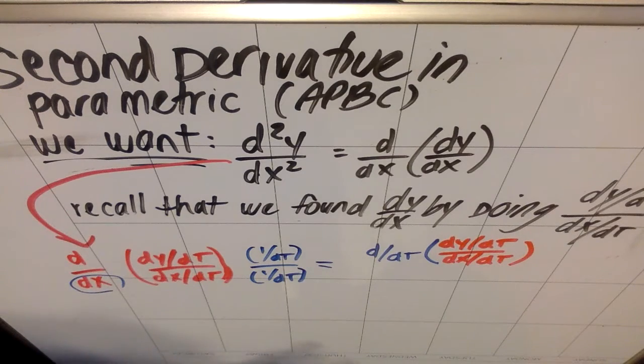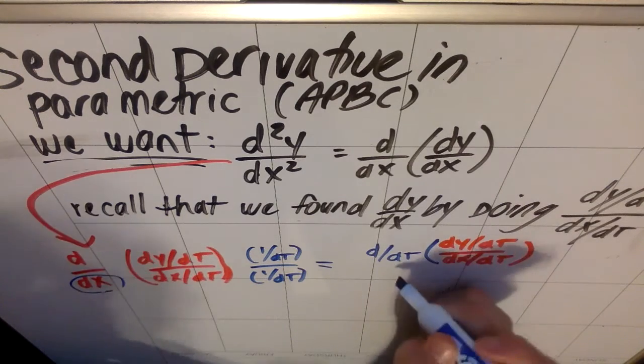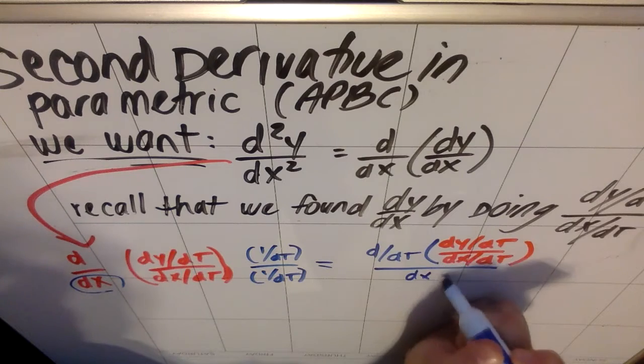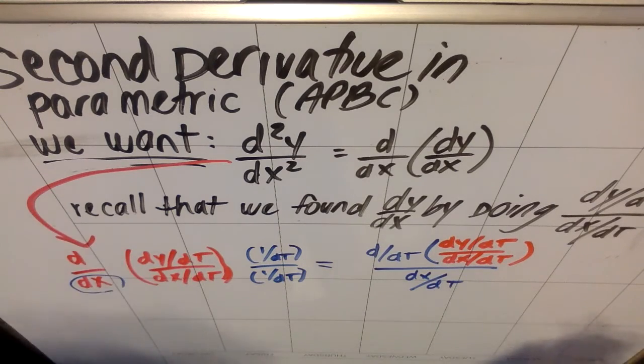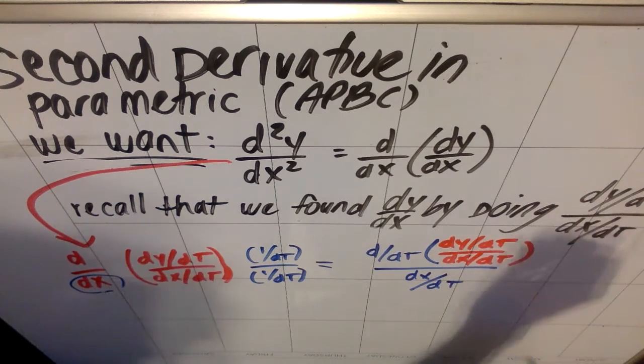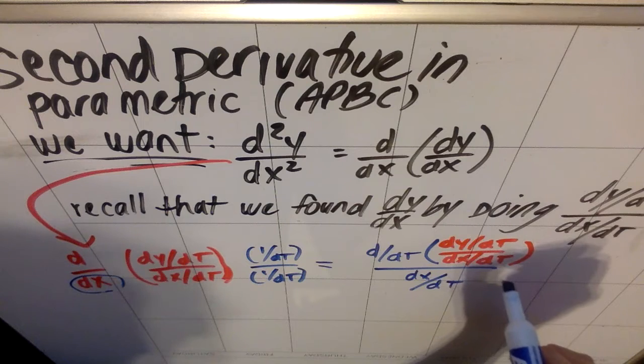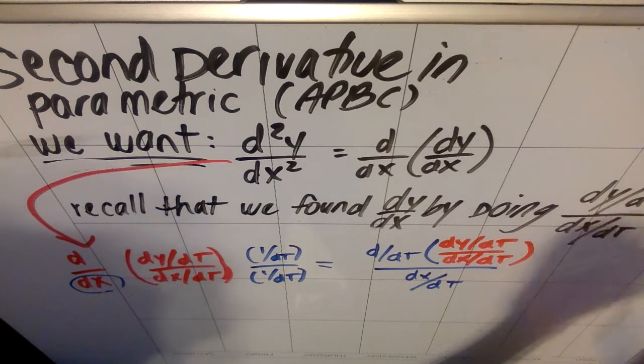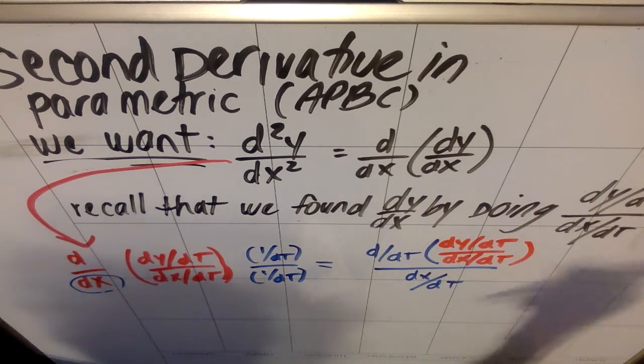And then on the bottom, I get this dx over dt. So essentially, the formula that we end up with is find the derivative of the first derivative that you took. So this first derivative you already found, and then divide it by the derivative of x with respect to t.